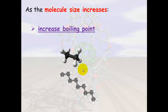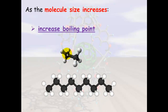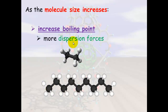If we have a look at these two molecules, we've got ethane, because there's two carbons, and nonane, because there are nine carbons. There are more atoms in this hydrocarbon than in this hydrocarbon, so there will be more dispersion forces. If there's more dispersion forces, there's a greater attraction between molecules, which leads to an increase in boiling point.